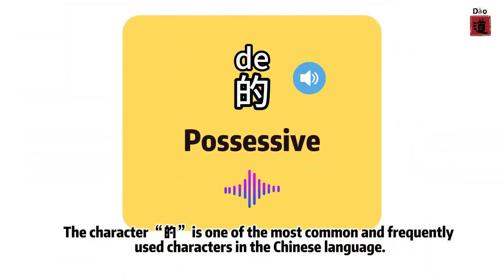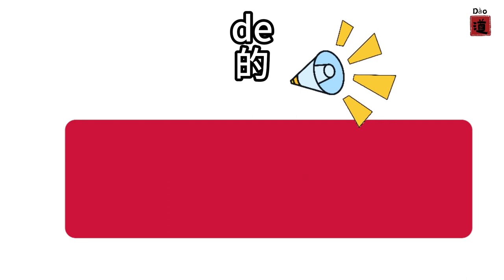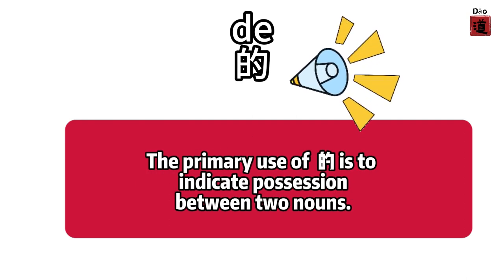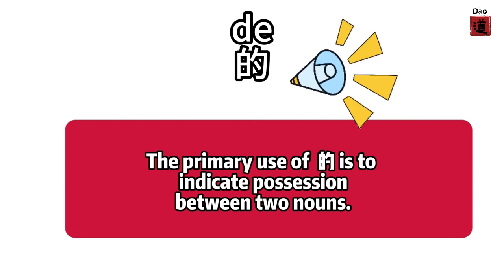The character 的 is one of the most common and frequently used characters in the Chinese language. In Mandarin Chinese, 的 is commonly used before nouns. The primary use of 的 is to indicate possession between two nouns.